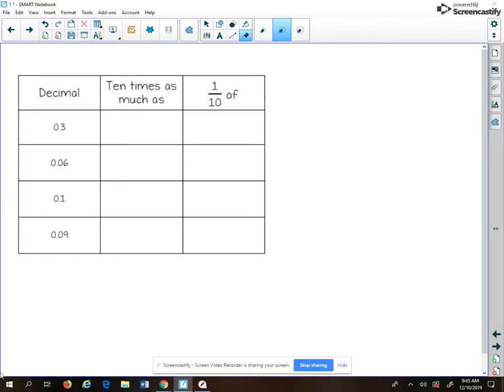Hello everyone. I just wanted to make a quick tutorial for these types of questions in chapter 3, which is starting with a decimal number and finding a number that is 10 times as much and a number that is one-tenth.